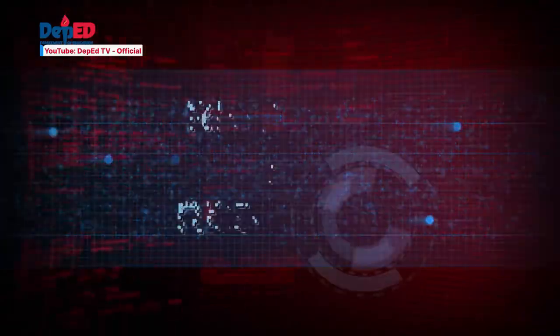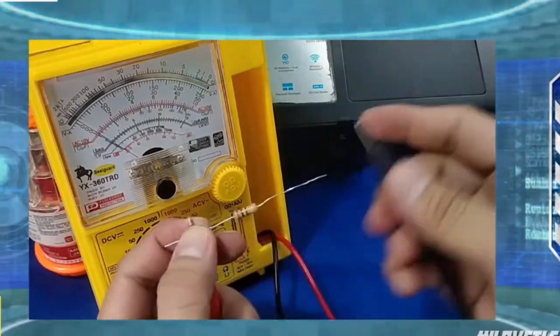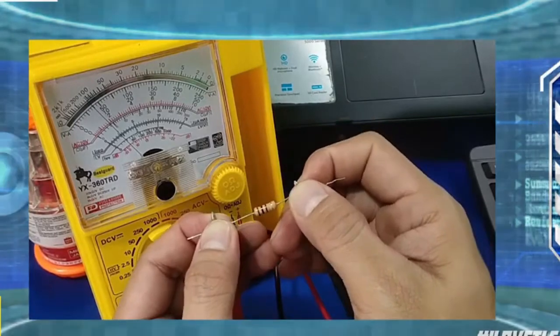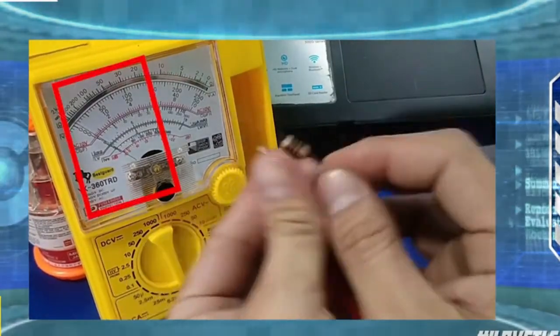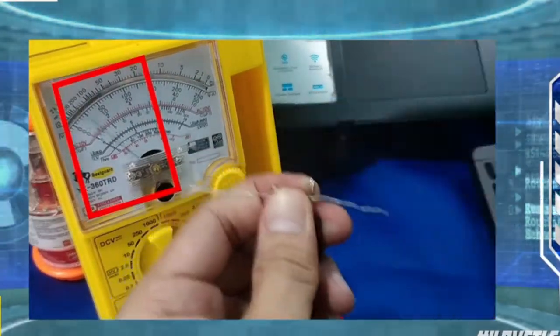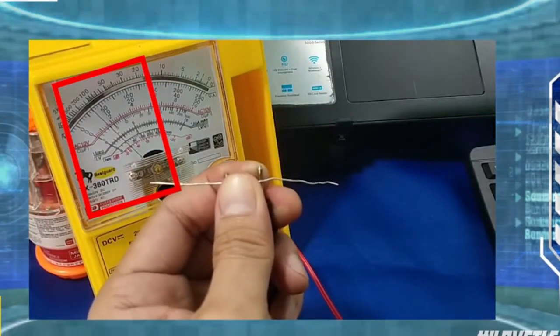Since we know the value of the resistor, let's check if our manual reading is correct. Attach your test probes at both ends of the resistor. There is no polarity involved, so you may connect the probes wherever you need to connect them. Observe that the ohmmeter reading is at 100 ohms reading with a 5% plus minus value. Therefore, your manual calculation is correct.